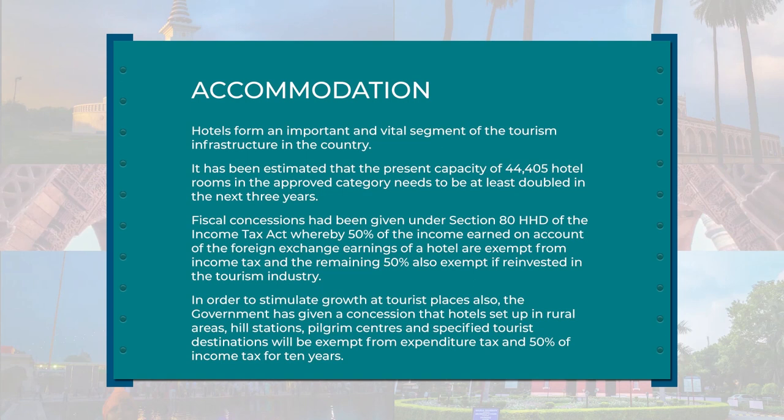Fiscal concessions had been given under Section 80 HHD of the Income Tax Act. In order to stimulate growth at tourist places, the government gave a concession that hotels set up in rural areas, hill stations, pilgrim centers, and specified tourist destinations would be exempt from expenditure tax and 50% of income tax for 10 years. An interest subsidy on loans for construction of hotels would also be given.